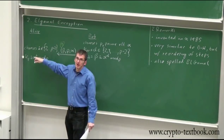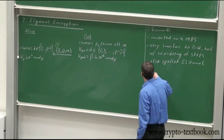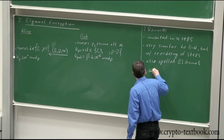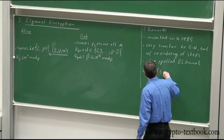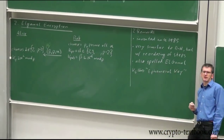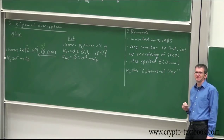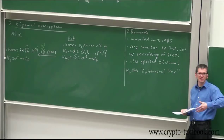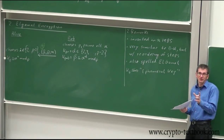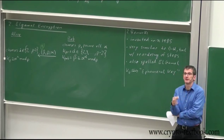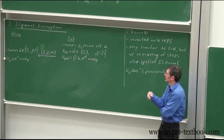Alice computes KE = alpha^i mod P, called the ephemeral key. Does anyone know what 'ephemeral' means? It's a temporal key — only for a short period, not long-term. This ephemeral key is standard terminology in cryptography. This corresponds to computing Alice's public key in the Diffie-Hellman setup above.